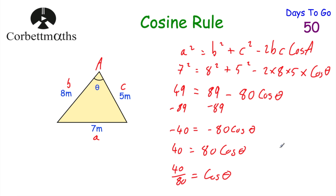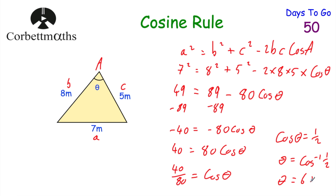So cos θ equals a half. Taking the inverse cos: θ equals inverse cos of one half, which equals 60 degrees. I didn't actually need my calculator here because I know that cos(60) equals a half, but you can check — inverse cos of 0.5 is 60 degrees. So this angle is 60 degrees. The cosine rule can also be used to find the size of an angle when you know all three sides.